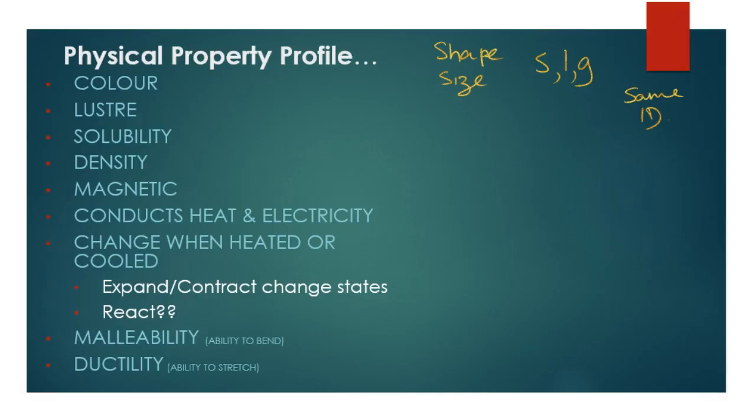So first of all we always check what color the substance is. We check whether it has any luster or the ability to have shine if you polish it. Solubility is another thing that we look at. Each different type of substance will be either soluble or insoluble in different liquids. You think about it, some things like fats, they don't dissolve in water, they don't mix with water at all, whereas other things will actually dissolve in water. So we actually will try and dissolve substances with different types of liquids and see what happens.